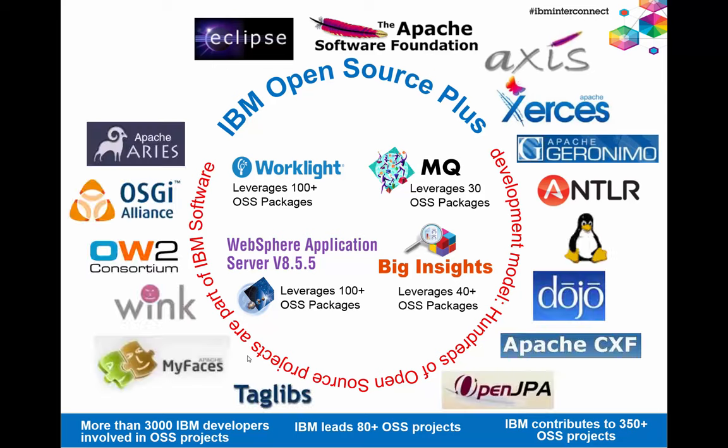For MQ and WebSphere Application Server, we use things like Apache CXF, Dojo, OpenJPA, Eclipse Link, and many other open source projects. Some of those open source projects IBM created to begin with — like Eclipse and others. We have contributed to and are leading some open source projects, including OpenJDK. IBM participates in open source very deeply and leverages the best of open source in its products. This is not dissimilar from Red Hat: if you look at the JBoss application server, there are lots of open source projects built in, and Red Hat reuses many from the community — a very similar model.